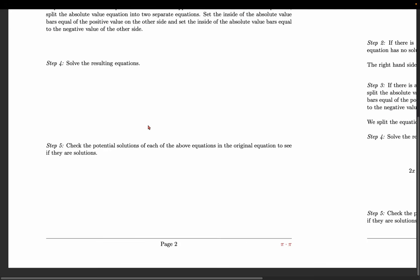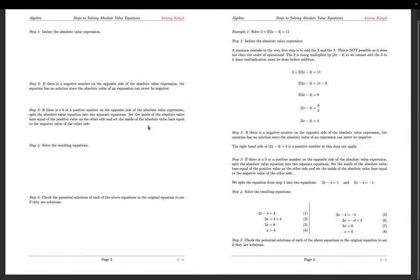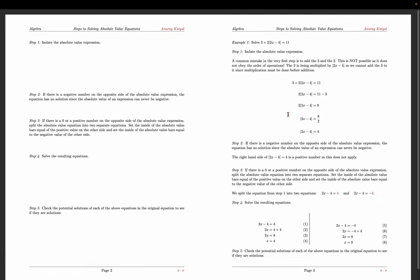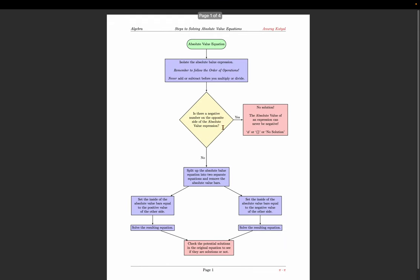For example, if you have 3 plus 2 times the quantity absolute value of (2x minus 4), you can never add the 3 and the 2. You have to subtract the 3 first and then divide by 2. We never add or subtract before we multiply or divide.